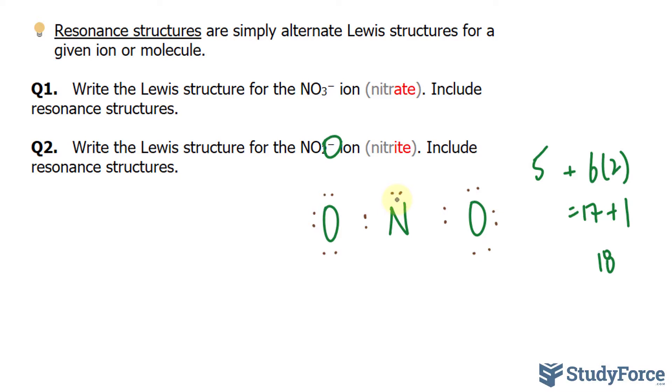That makes 18 electrons. This has a complete octet, that does, but this doesn't. It only has 6 electrons. To rectify this situation, what can happen is these 2 electrons and these 2 electrons can make a double bond.